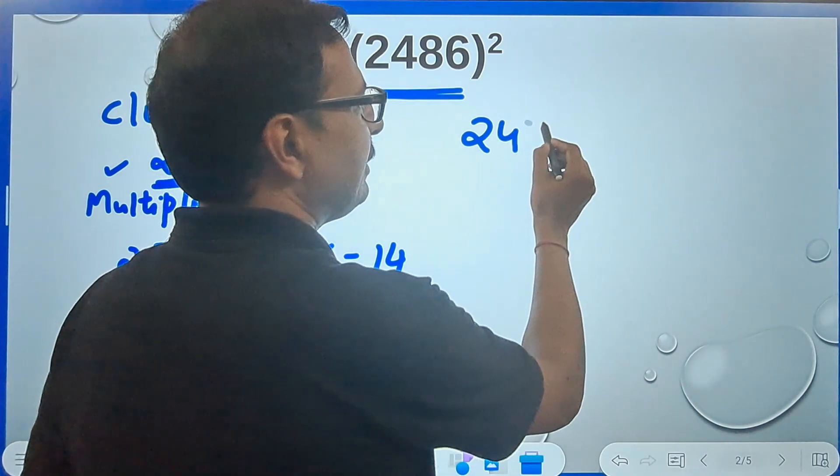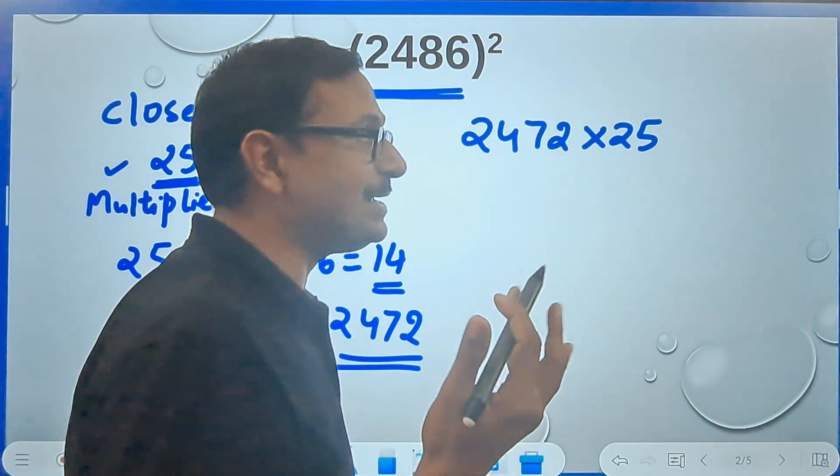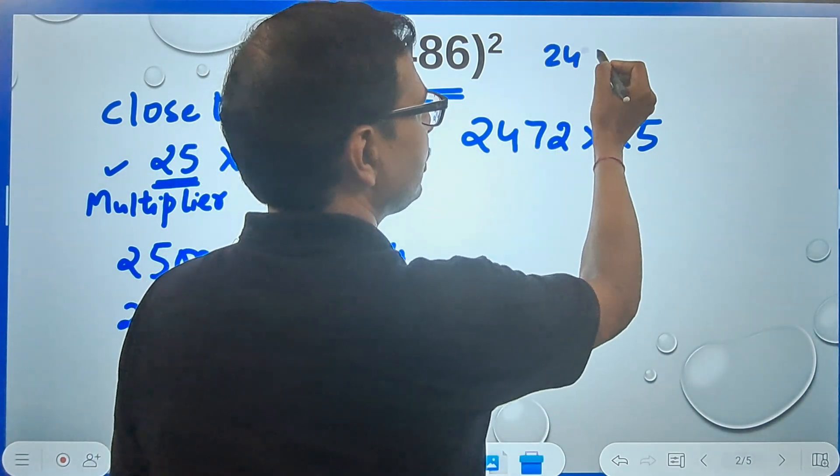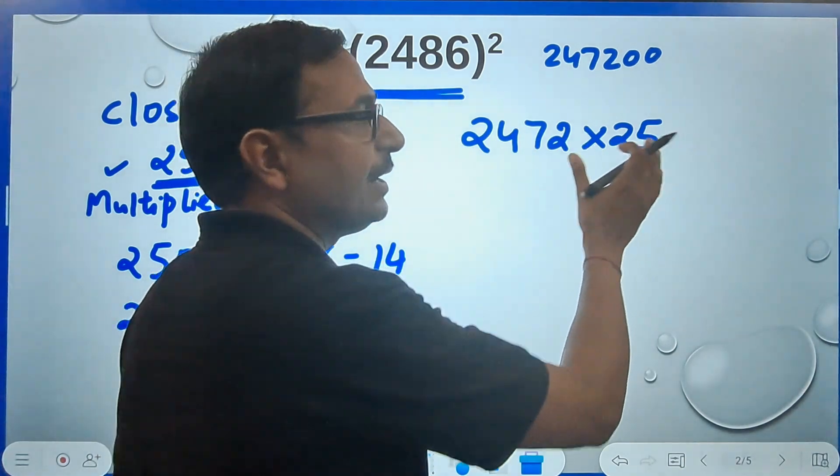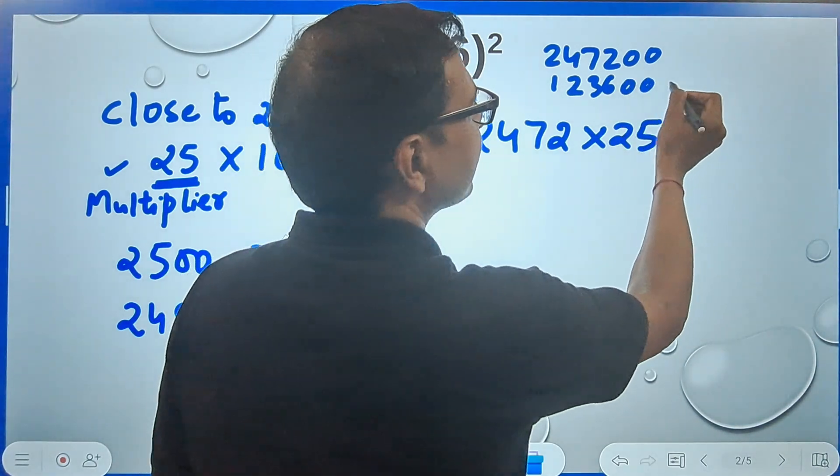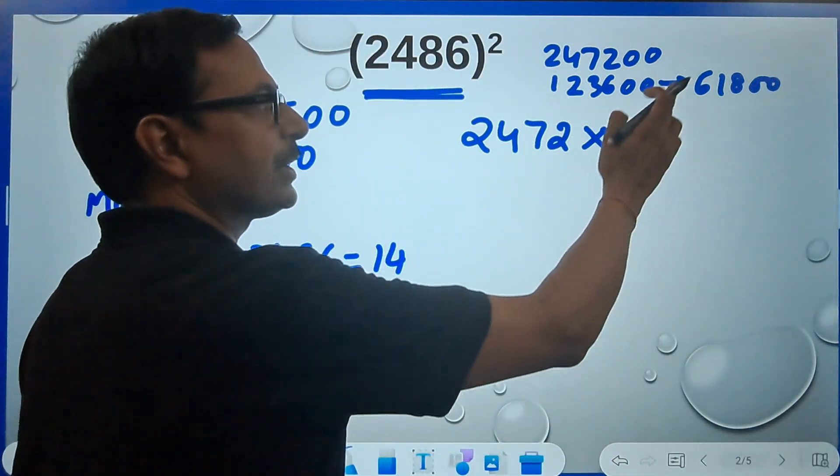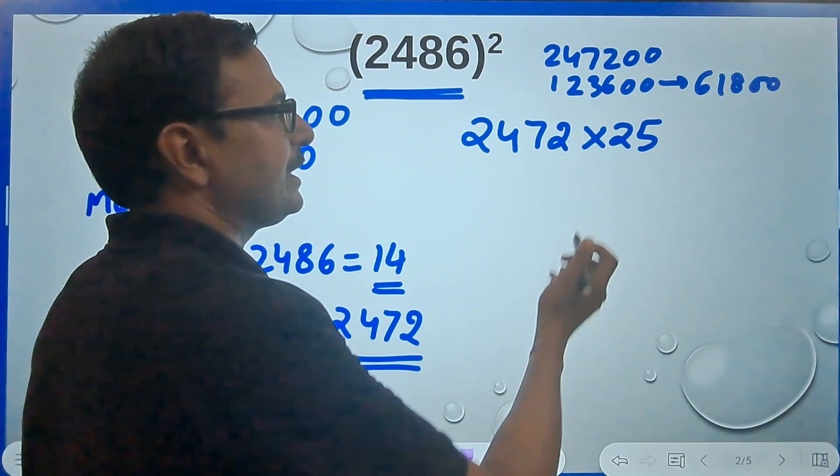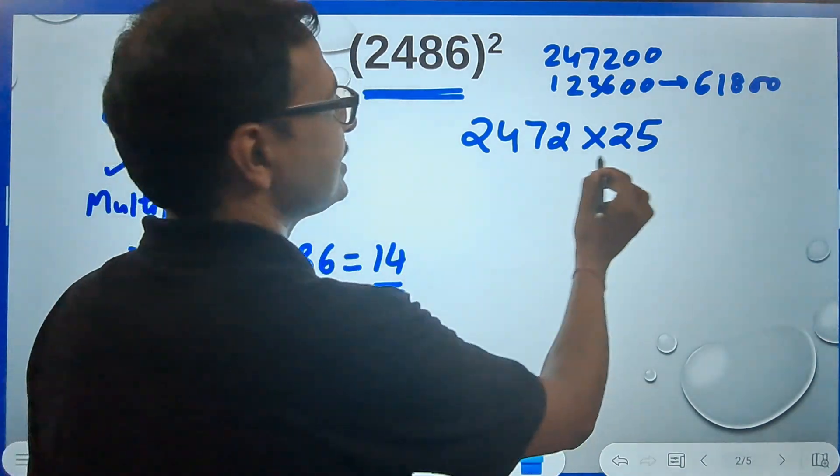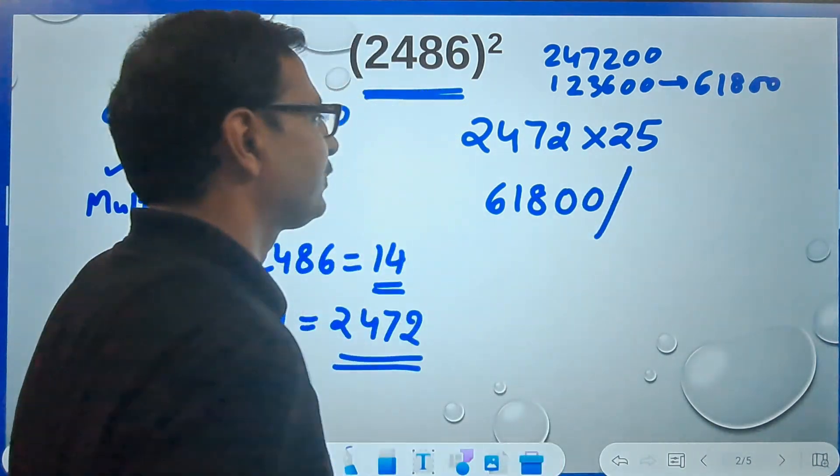Do you know how do you multiply any big number by 25? You can actually multiply that by 100 and take one fourth. So I will do 2472 double zeros, that is I have multiplied this by 100. Take half of this, this is 123600, and further take half of this, this will become 61800. I found out this product using a simple logic, multiplication by 25 is multiplication by 100 and then taking half twice.